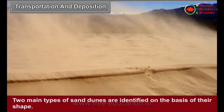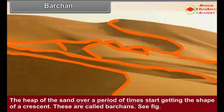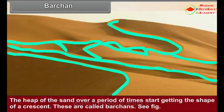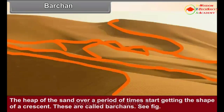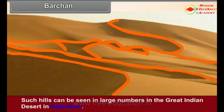Two main types of sand dunes are identified on the basis of their shape. Barchan: Due to an obstacle in the path of the wind or due to the lowering of its velocity, the sand moving with it gets dropped at some places. The heap of sand over a period of time starts getting the shape of a crescent. These are called barchans. The barchan slope that faces the wind is gentle, whereas the opposite slope is steep. Such hills can be seen in large numbers in the Great Indian Desert in Rajasthan.